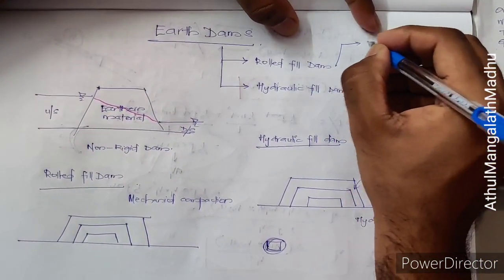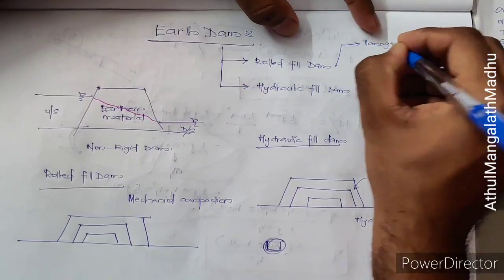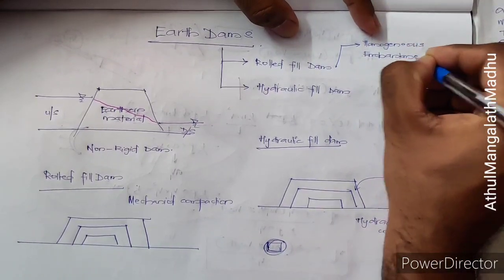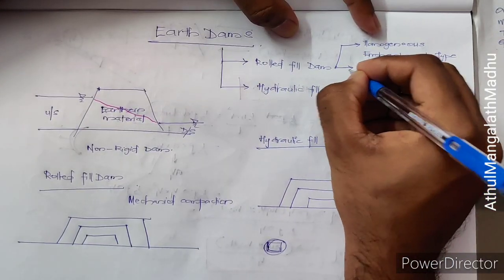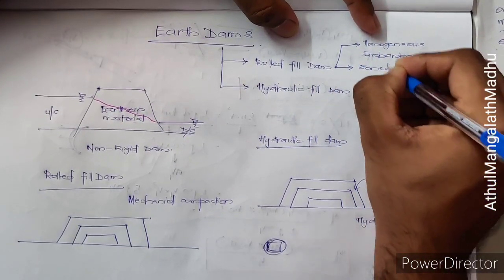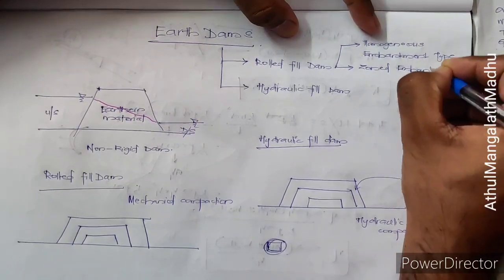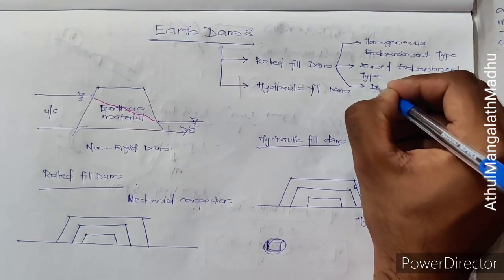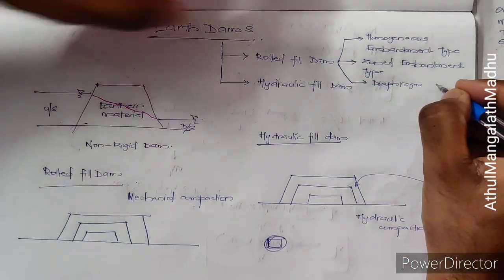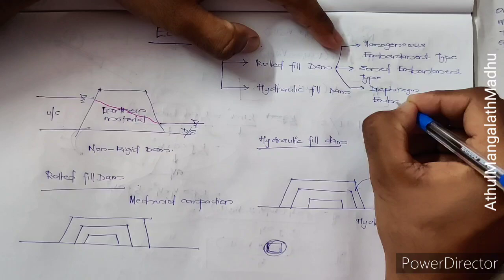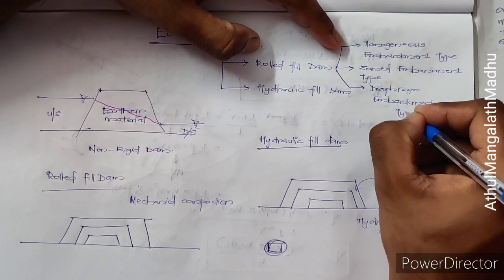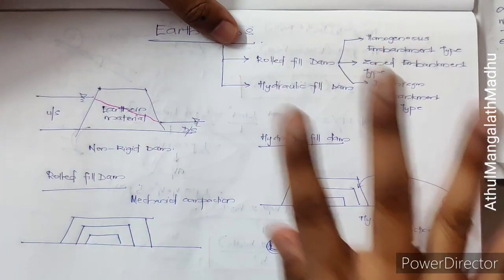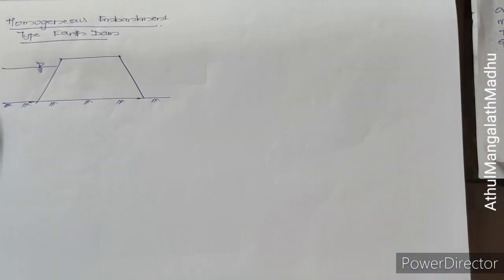The rolled fill dam can be further classified into three types: homogenous embankment type, zoned embankment type, and diaphragm embankment type. We'll go through each of these sub-types now.